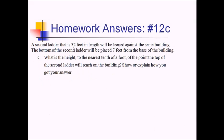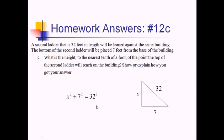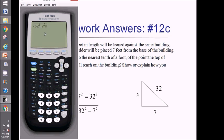For part c, a second ladder is 32 feet long, placed against the same building with the bottom 7 feet from the base. We want the height to the nearest tenth of a foot that the top reaches. I would start by drawing a new diagram — a new right triangle where the hypotenuse is 32 and the base is 7 feet. We're finding the remaining side for the height. Using Pythagorean theorem: x squared plus 7 squared equals 32 squared. To solve, we take the square root of 32 squared minus 7 squared, which gives approximately 31.2 feet.